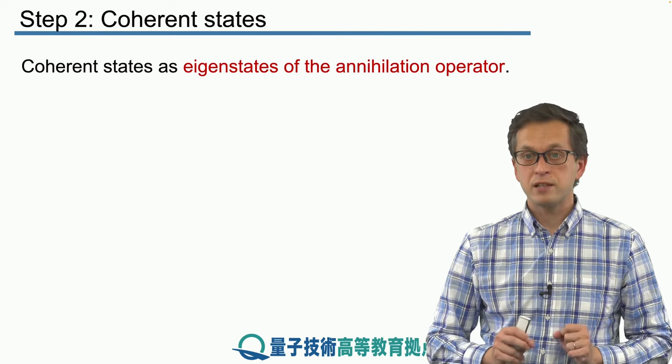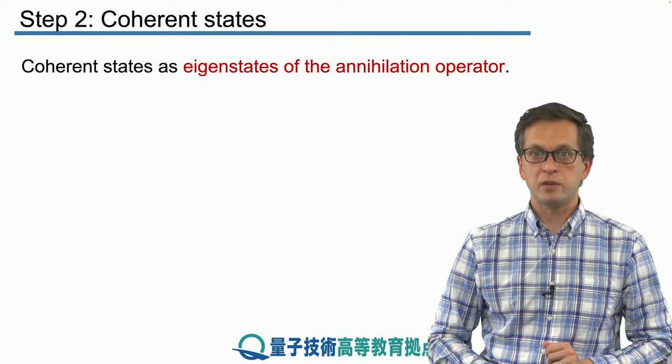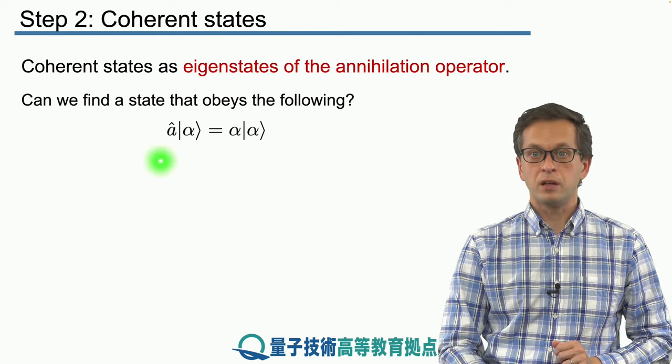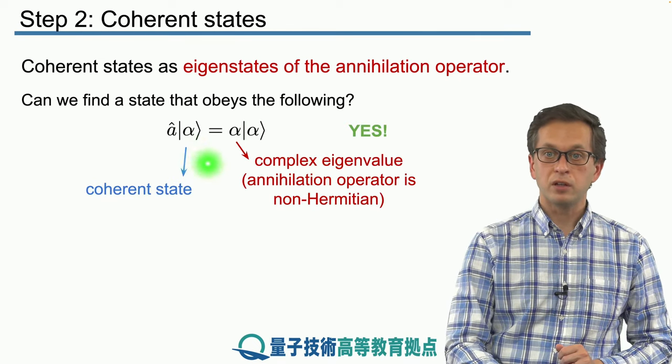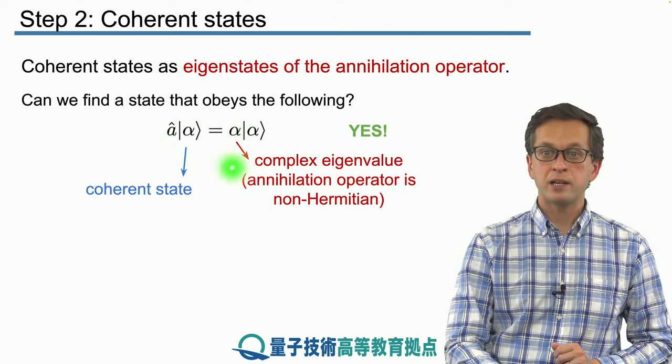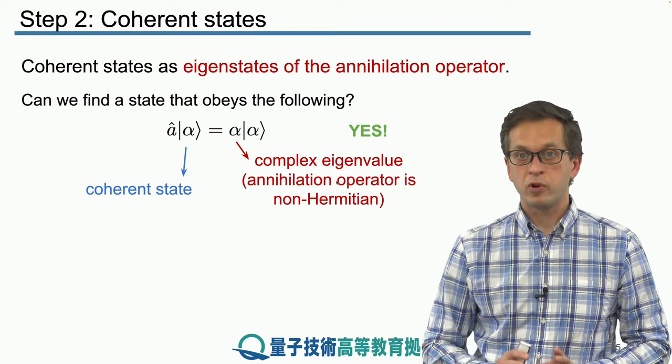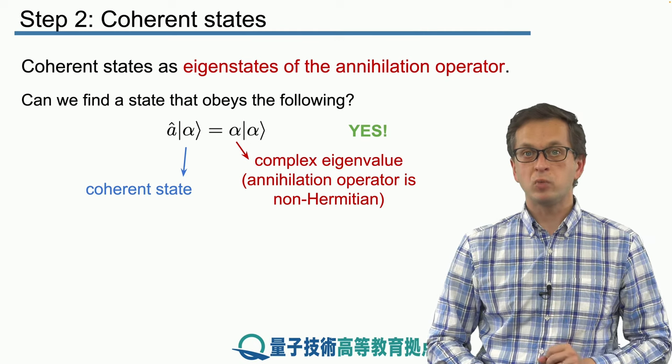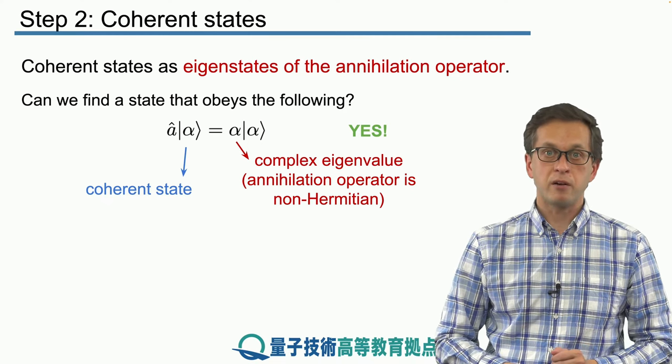In one short sentence, coherent states are eigenstates of the annihilation operator. Now, what does this mean? Let's do some maths. We start with the following eigenvalue equation. We denote by alpha the coherent state. And when the annihilation operator acts on our coherent state alpha, it pulls out a complex eigenvalue alpha in front of the state. So this is just the usual eigenvalue problem. The difference is that alpha is a complex number. And that's because A is not an observable. It's not a Hermitian operator. Meaning that its eigenvalues are in principle complex.